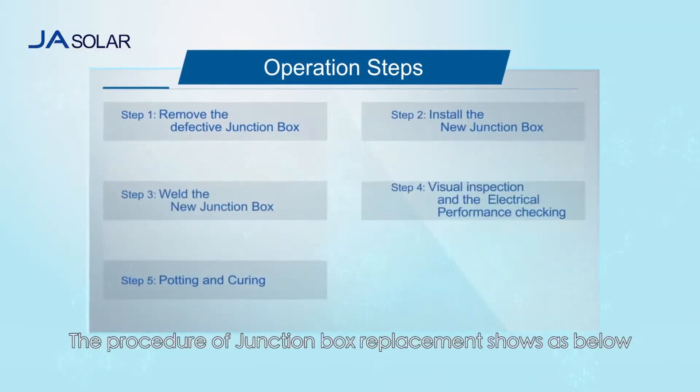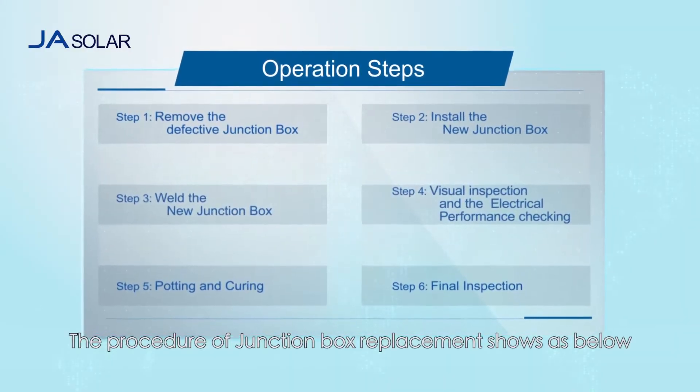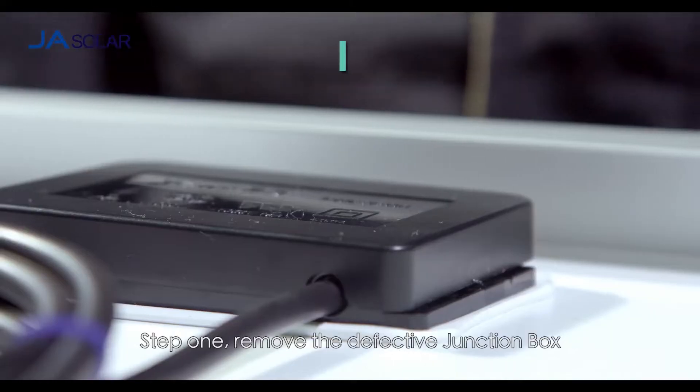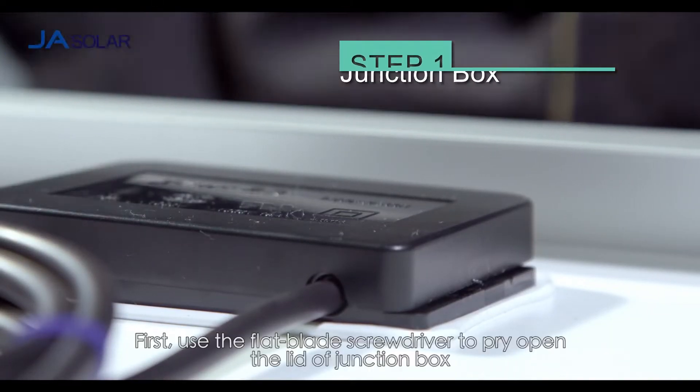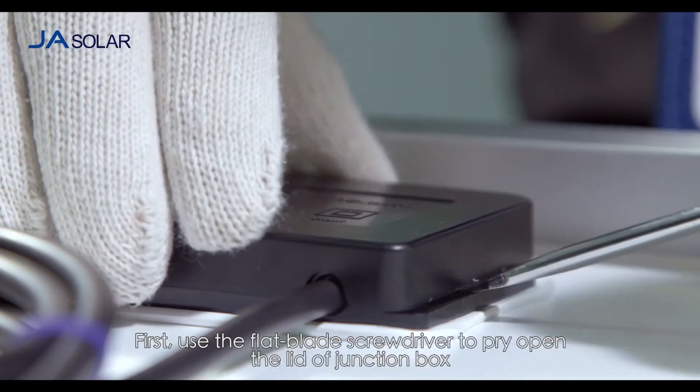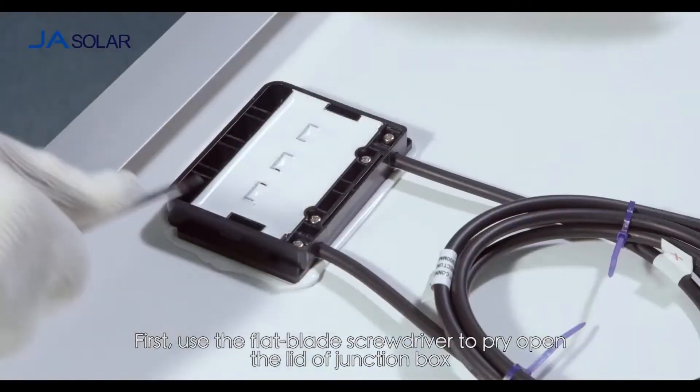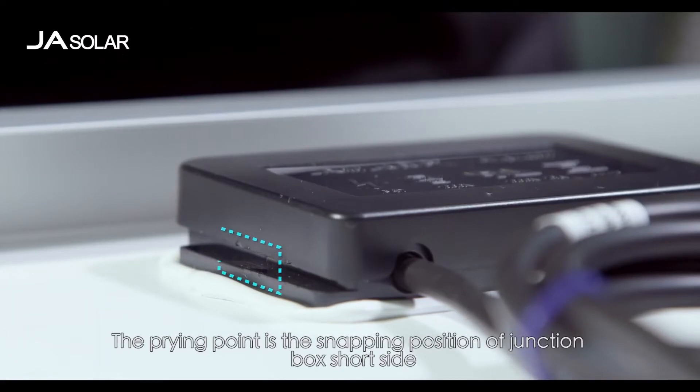The procedure of junction box replacement shows as below. Step 1: Remove the defective junction box. First, use the flat blade screwdriver to pry open the lid of junction box. The prying point is the snapping position of junction box short side.